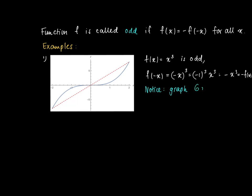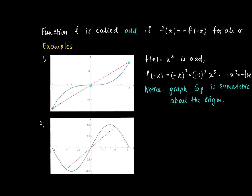Notice that the graph of f is symmetric about the origin. So if we take any point on the graph, we find it on the other side of 0 as well. As a second example, the function f(x) = sin(x), which is more or less a translation of cos(x). This function is odd since sin(-x) = -sin(x). We see that the graph is symmetric about the origin — if you take a point on the graph, we find it on the other side again.